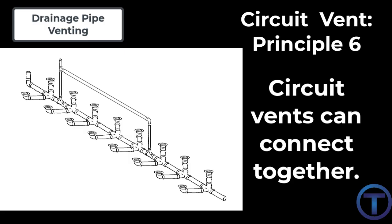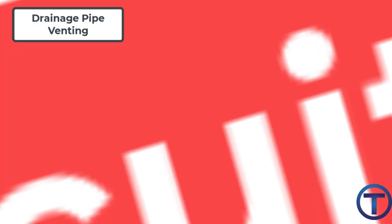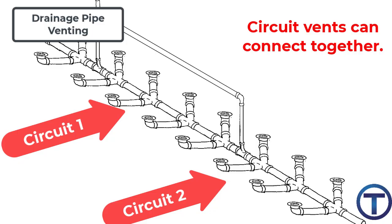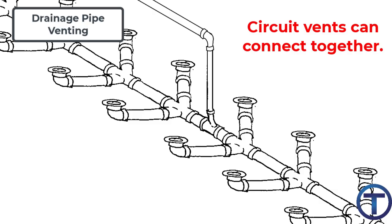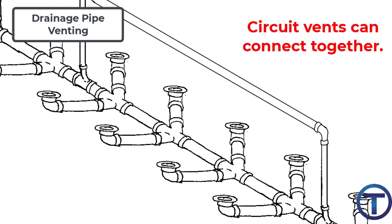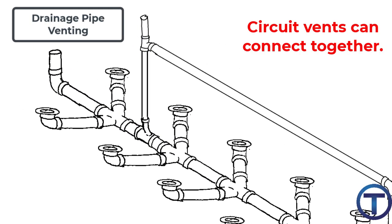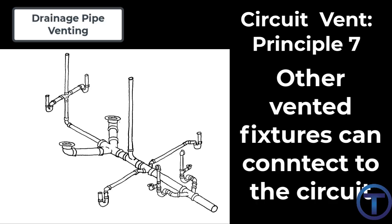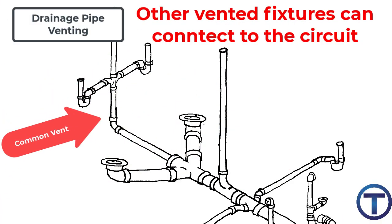Circuit vent principle five: the circuit vent pipe must be a dry vent only and is not allowed to receive any discharge from any fixtures. Circuit vent principle six: circuit vents are allowed to be connected together, so you can have several circuits in a row and the vents of those can connect together. Every eight fixtures would be considered a circuit — it needs a circuit vent, then a new circuit starts. Circuit vent principle seven: fixtures other than circuit vented fixtures are allowed to connect into the circuit provided that they are either individually or common vented.